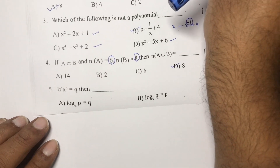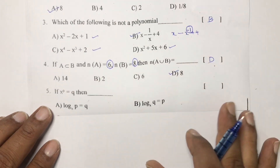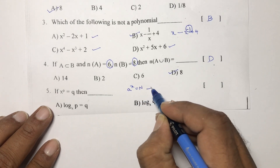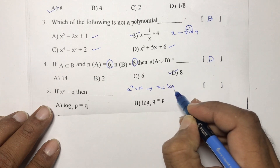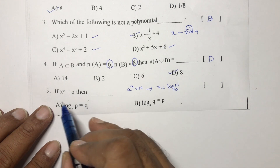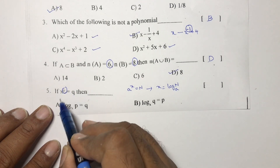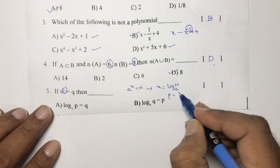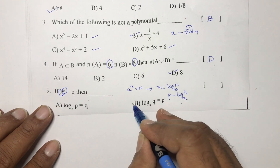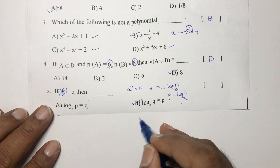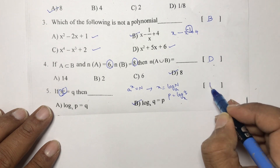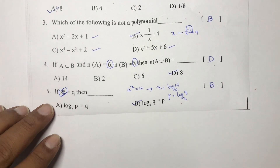Next: x power p equals q. Using the definition: if a power x equals n, then x equals log n to the base a. Here, in place of x we have p, so p equals log q to the base x. The correct option is B.